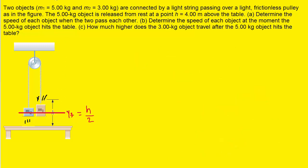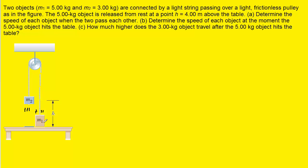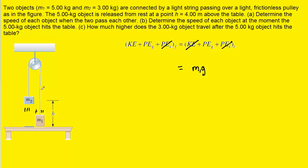Now onto part B, which asks for the speed when the 5-kilogram object, mass 1, hits the table. We adjust the picture so that m1 is located all the way down at the surface, and m2 is pulled all the way up to height h. We conserve energy again. There's no spring, so those terms are eliminated. The objects were released from rest, so initial kinetic energy is zero, and the only initial gravitational potential energy is m1 times g times h.